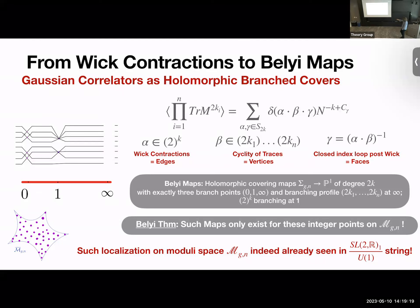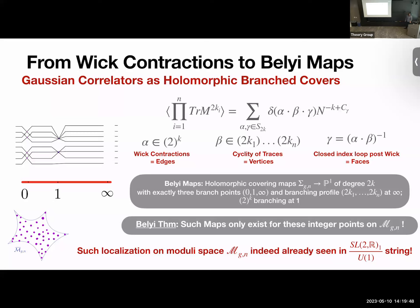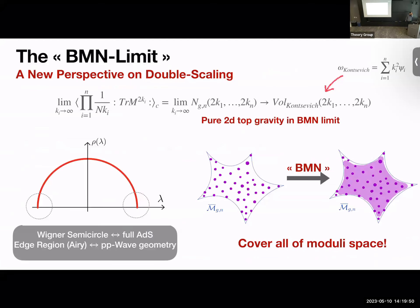This connects with work of Okounkov and others on localization in this theory, where it was shown that the only maps contributing to the path integral are exactly branched covers of the sphere. The remaining thing to work out is to show they branch over exactly three points in that particular way, which would completely establish the A-model proposal.